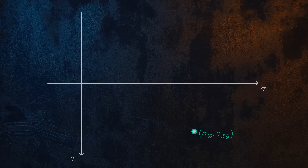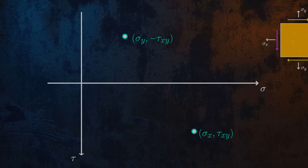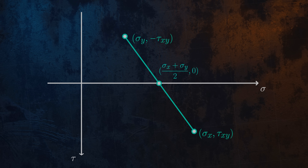Then, we plot a point corresponding to the stress conditions on the y-face, by plotting a point with coordinates sigma y, negative tau xy. The sign convention we use for Mohr's circle is that shear stresses are positive if they tend to rotate the stress element counterclockwise, and are negative if they tend to rotate it clockwise. This is why tau xy is negative on the y-face of our element when we draw Mohr's circle. Normal stresses are positive if they are tensile, and negative if they are compressive. The line between these two points defines the diameter of our Mohr's circle, which we can now draw.